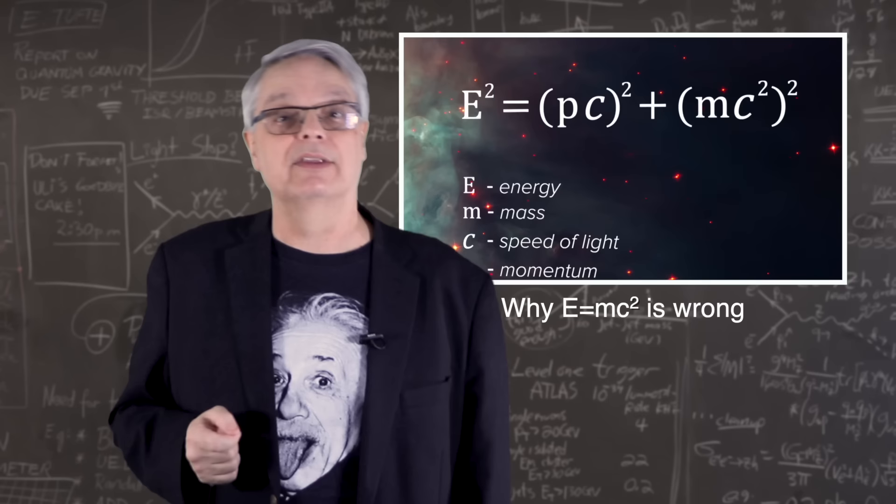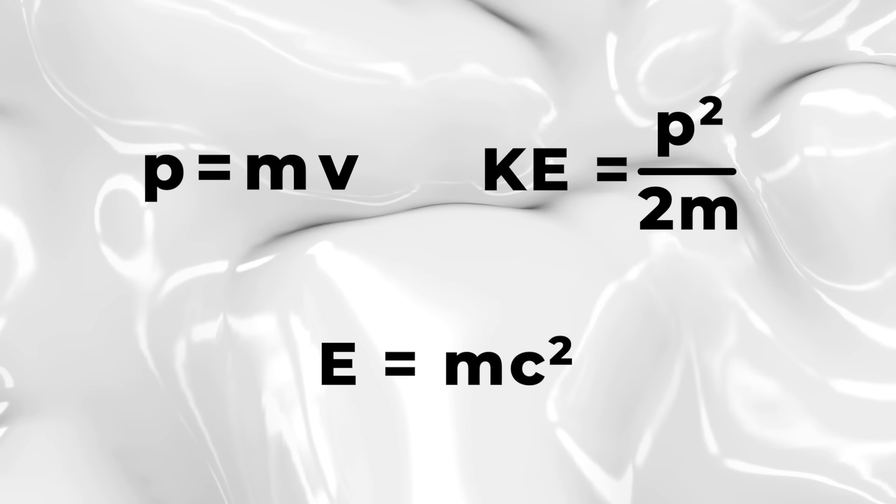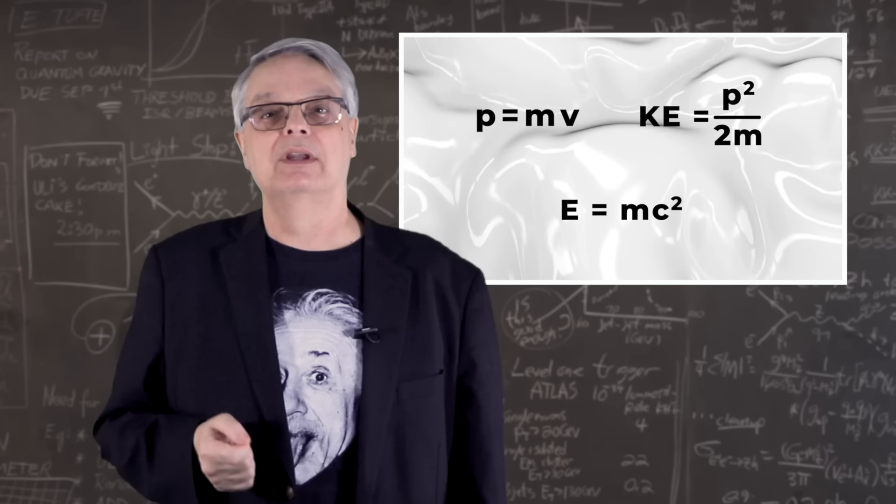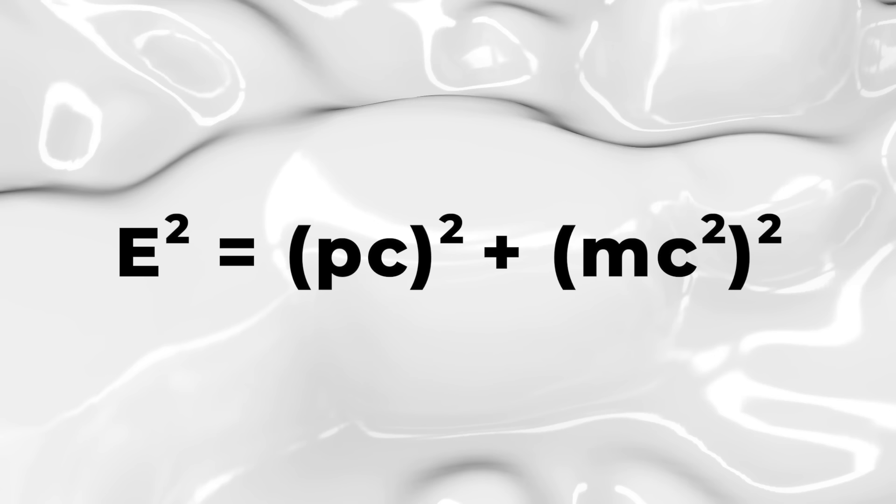So now we're ready to get to the truth. I put the three equations I've mentioned so far here. E equals mc squared, p equals mv, and KE equals p squared divided by 2m. And all of these equations are just fine and correct, but they are all equations that only describe objects with mass that move slowly. Those equations fail in other situations. It turns out that there is a more general equation that works for all situations, and it looks kind of like Einstein's famous equation.